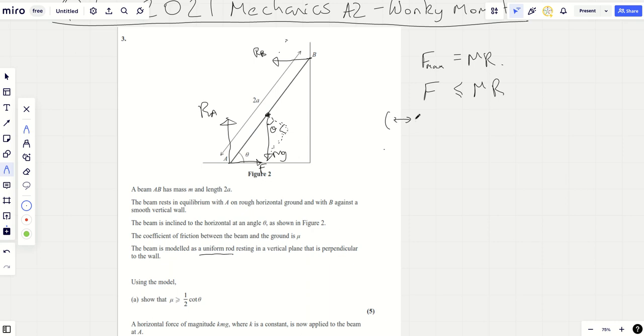Lefties equal righties. So F is going to be RB. Upies equal downies. So RA is going to be equal to MG. That's always a secret here. Now we need to get some angles here and that's why I'm going to take moments at A. It also knocks out two forces.